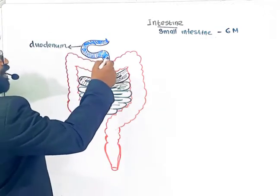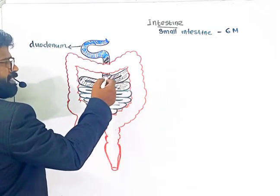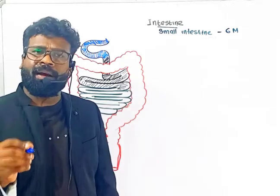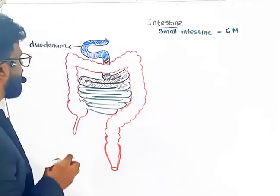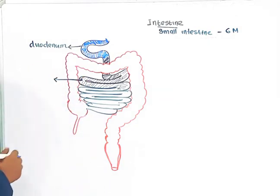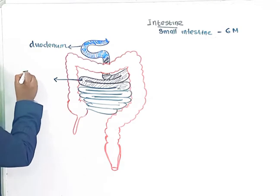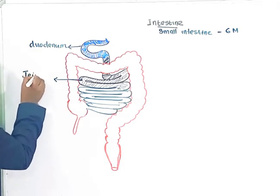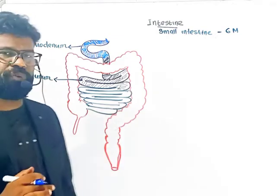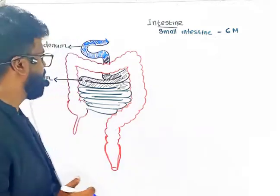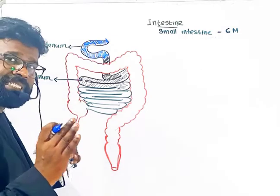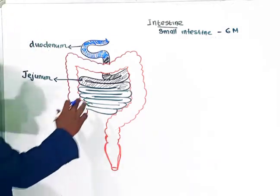The duodenum opens to the second portion — the middle and coiled part of the small intestine. This middle and coiled portion is called the jejunum.